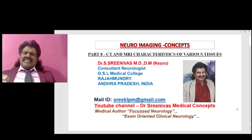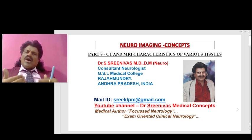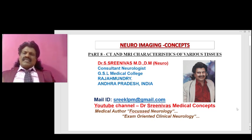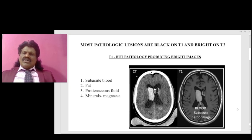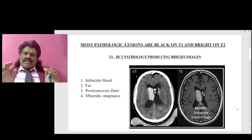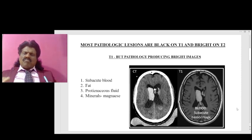Today we are going to talk about a very important topic: the CT and MRI characteristics of various tissues — how they appear on T1 and how they appear on T2. This is neuroimaging concepts part eight. The key principle concerns T1 and T2 weighted sequences.